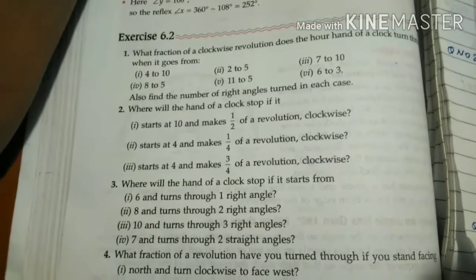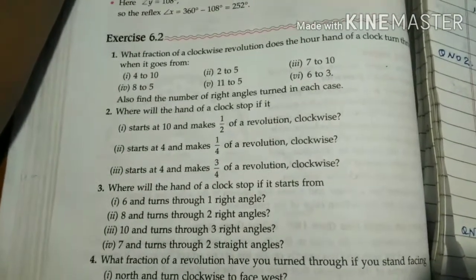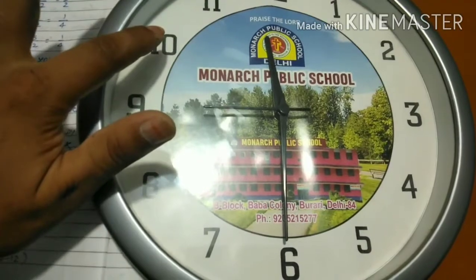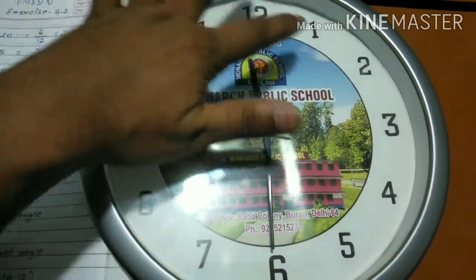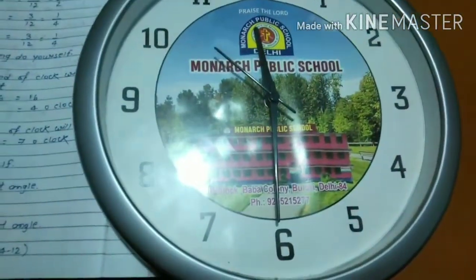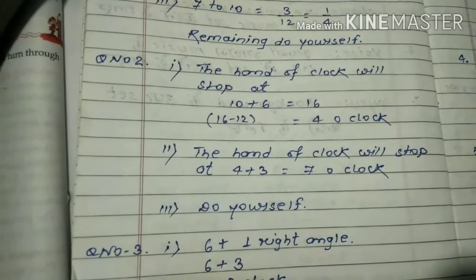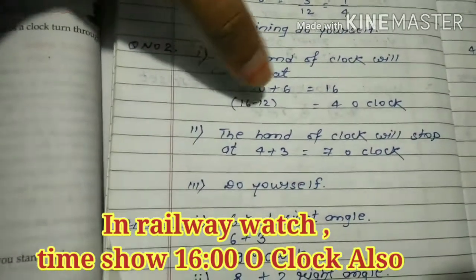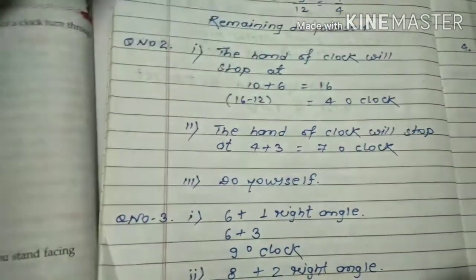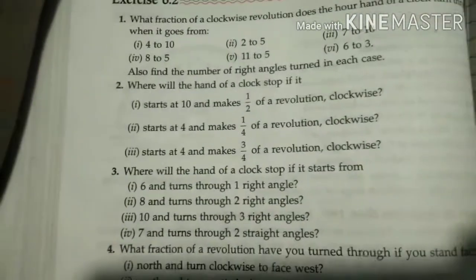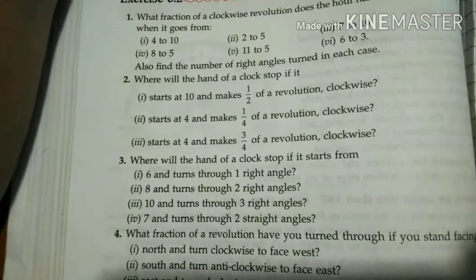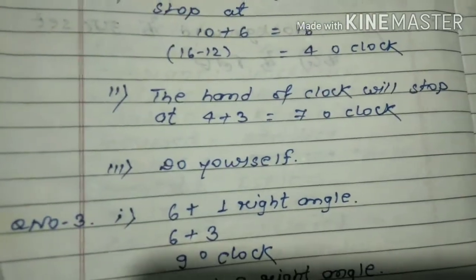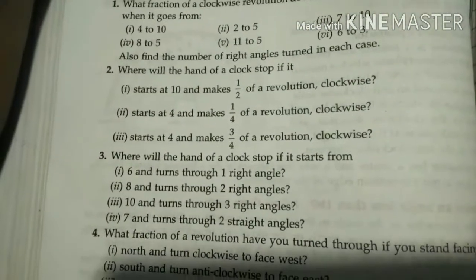Half means 6 points, quarter means 3 points, three-quarters means 9 points. Question first: starts at 10, makes half revolution. You can see in the watch, 10 to 6 points: 1, 2, 3, 4, 5, 6. So it stops at 4. The solution is 10 plus 6 equals 16, which is 4 o'clock.